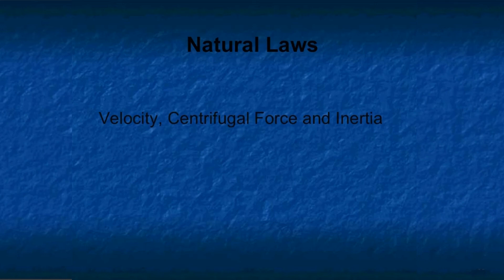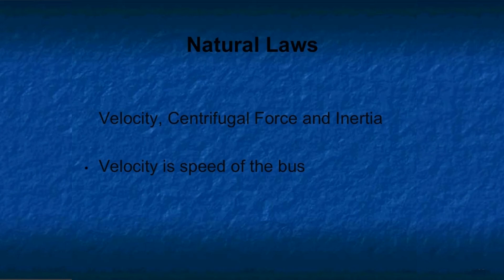In this first section, we're going to talk about the natural laws that affect the operation and movement of vehicles. Specifically, we're going to be looking at velocity, centrifugal force, and inertia. Velocity is the word for speed. All moving objects have energy and motion, which is known as kinetic energy. The object is going to continue to move until the energy is used up. Most times, the speed is changed to friction and heat by applying the brakes.